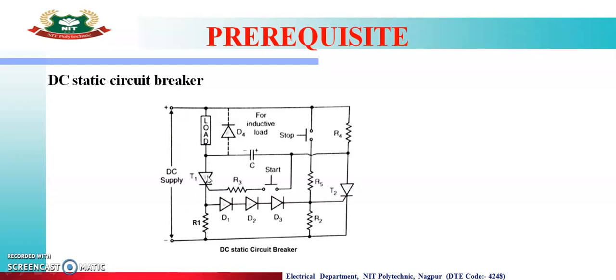Once T1 turns ON, the major part of the DC supply starts flowing to the load. Simultaneously, current flows through R4, through the capacitor, through T1, and through R1, causing the capacitor to charge with the right plate positive.